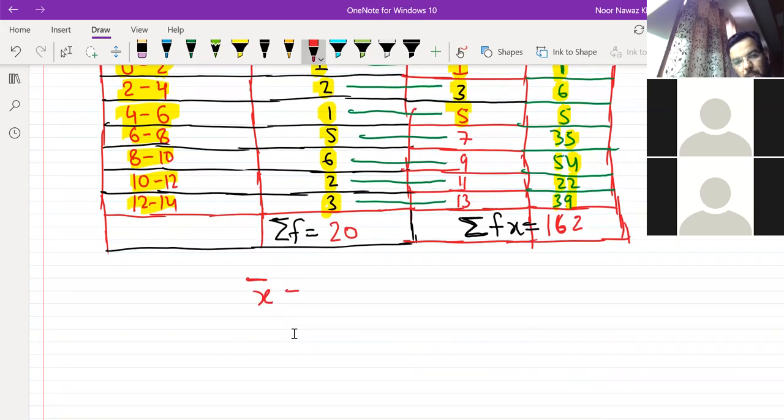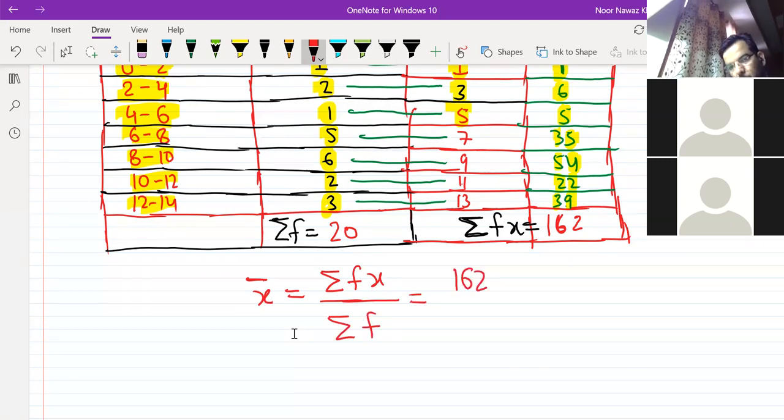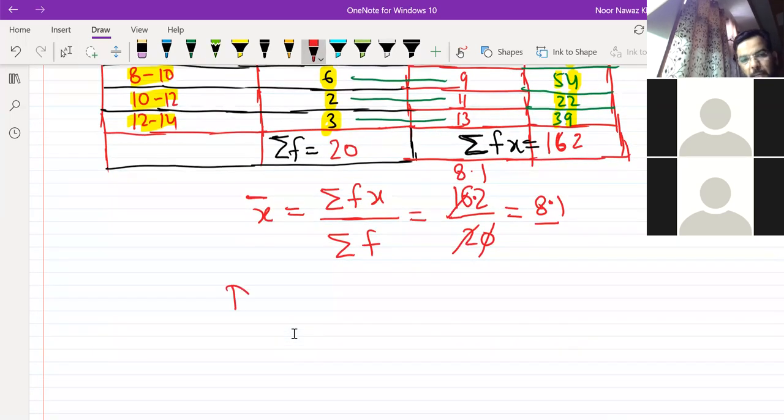Mean x̄ equals to Σfx over Σf. So how much Σfx? 162. And how much Σf? 20. So from 0 you will have a decimal and from 2 you will cancel. So 2 is 8 and 2 is 1. So how much is it? 8.1. This is our answer. And since we have multiplied this method, we call it direct method. Do you understand? Yes sir.